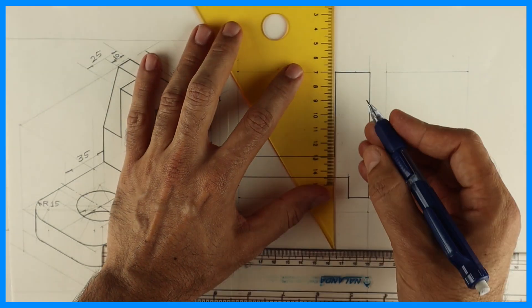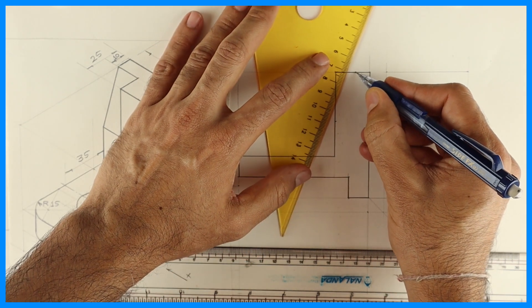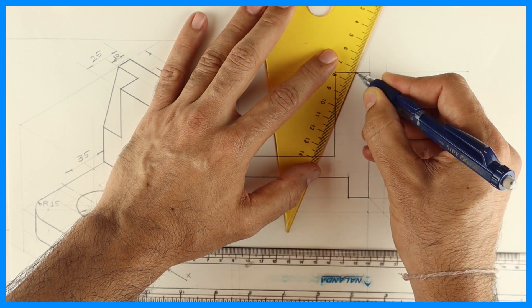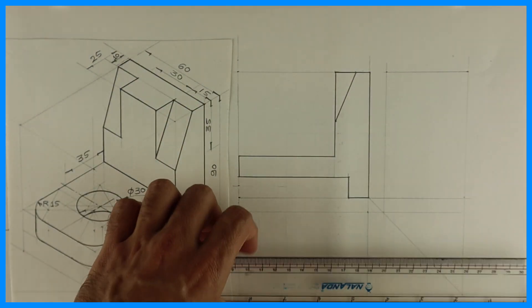Then this height is 35, so take 35 from up and 10 from here, right, you join this. So we are almost done with front view, only dotted lines are remaining for circle.